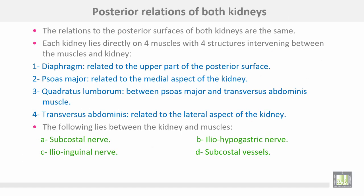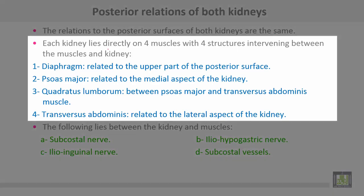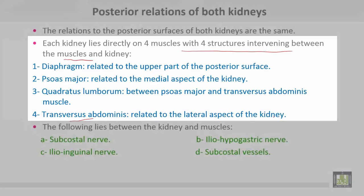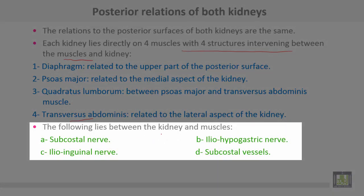The posterior relations of both kidneys are the same. Each kidney lies directly on four muscles, with four structures intervening between these muscles. Number one is the diaphragm, related to the upper part of the posterior surface. Number two is the psoas major, related to the medial aspect of the kidney. Number three is the quadratus lumborum, between psoas major and transversus abdominis muscle. Number four is the transversus abdominis, related to the lateral aspect of the kidney. The following structures lie between the kidney and the muscles: number one, the subcostal nerve.